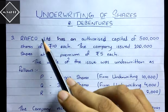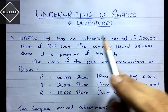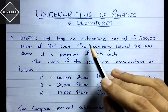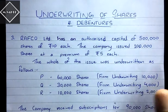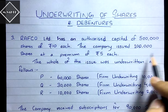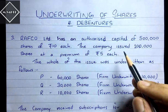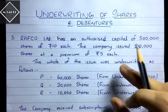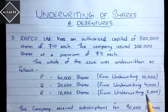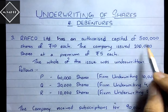The question states: Rafco Limited has an authorized capital of 5 lakh shares of ₹10 each. This authorized capital is of no use to us — always ignore the authorized capital. The company issued 1 lakh shares at a premium of ₹5 each. Since we are only calculating net liability and total liability, not the underwriter's commission, just ignore the premium of ₹5 each.